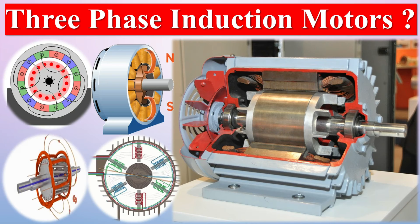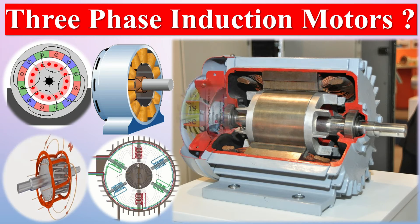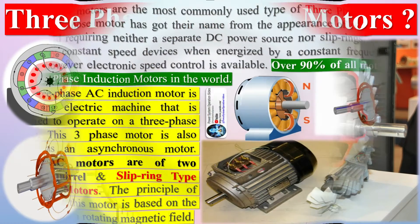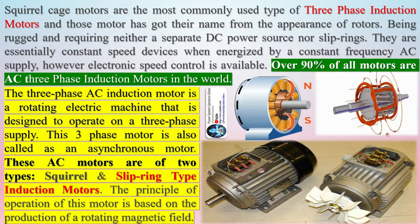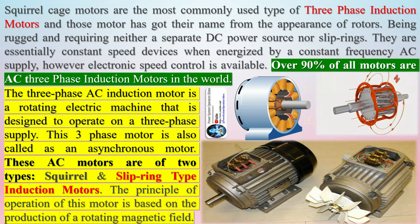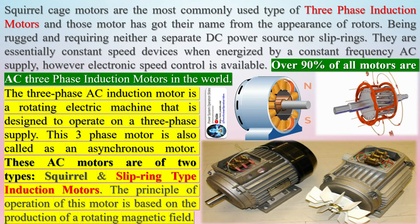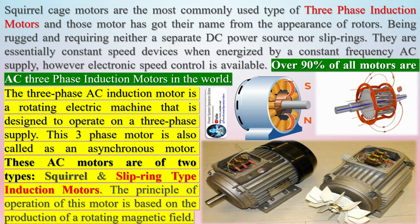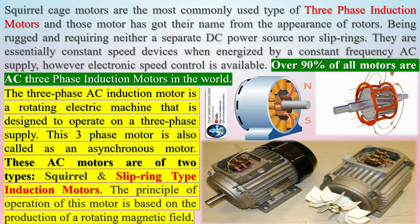Squirrel cage motors are the most commonly used type of three-phase induction motors, and these motors got their name from the appearance of their rotors. Being rugged and requiring neither a separate DC power source nor slip rings, they are essentially constant speed devices when energized by a constant frequency AC supply; however, electronic speed control is available.